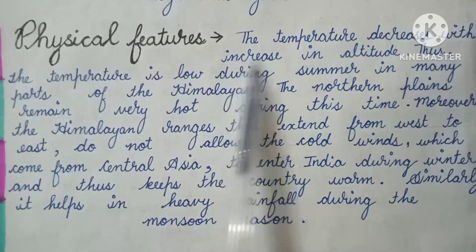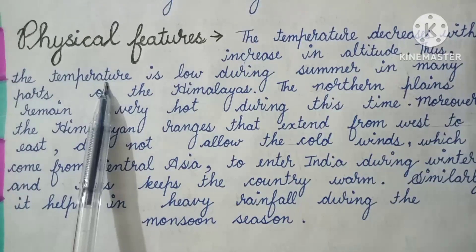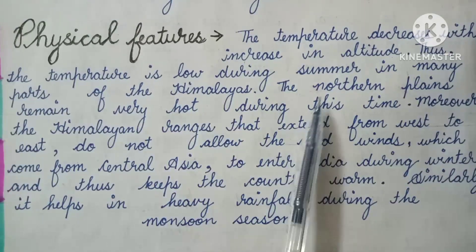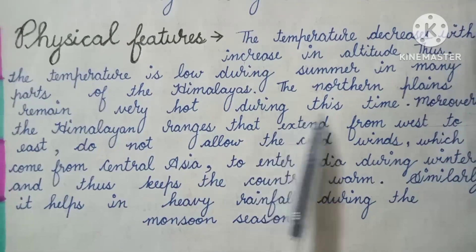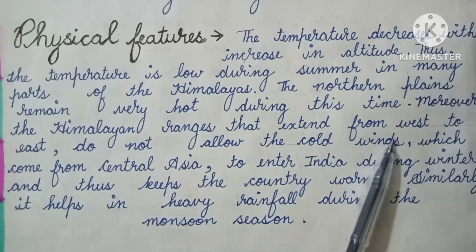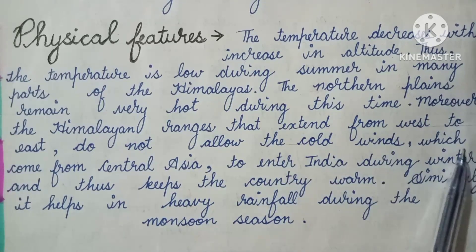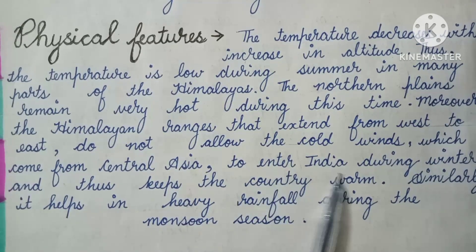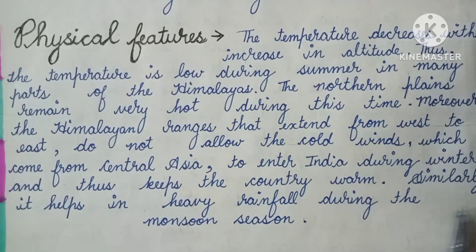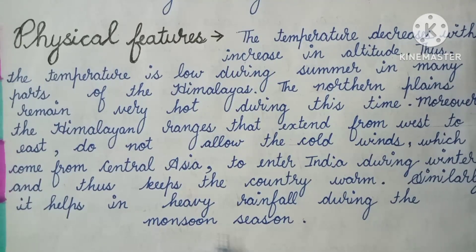The second factor is physical features. The temperature decreases with increases in altitude, so the temperature is low during summer in many parts of the Himalayas, while the northern plains remain very hot. Moreover, the Himalayan ranges extending from west to east do not allow cold winds from central Asia to enter India during winter, keeping the country warm. Similarly, they help in heavy rainfall during the monsoon season.